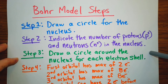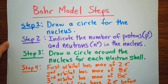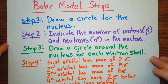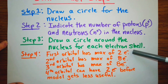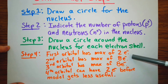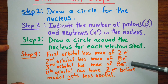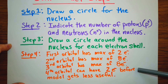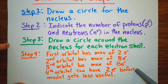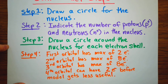Step three, you're going to draw a circle around the nucleus for each electron shell — that's where we're going to put our electrons. The first orbital has a maximum of two electrons. The second orbital has a maximum of eight electrons. The third orbital has a maximum of eight electrons. The fourth orbital can have two electrons before the model starts getting less useful, because that's when we hit the transition metals, which start putting electrons in different places.